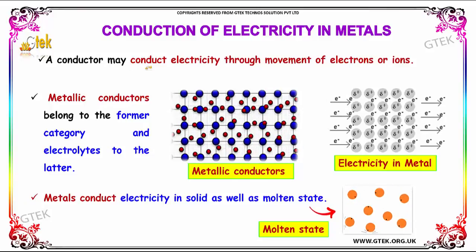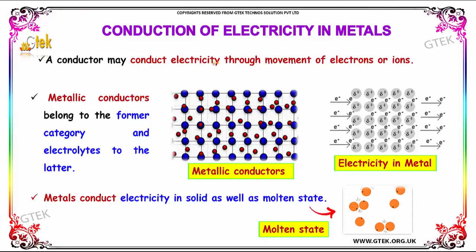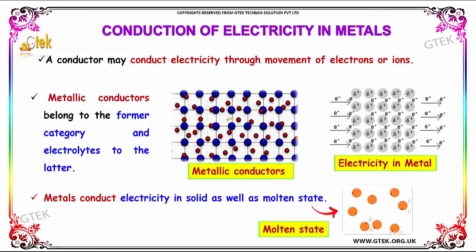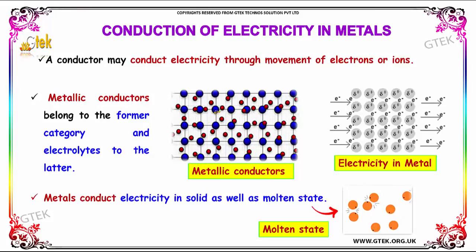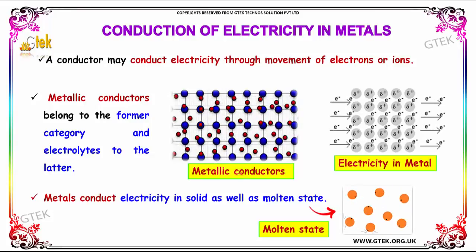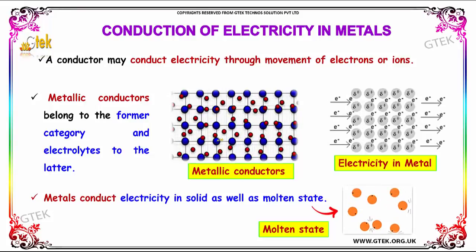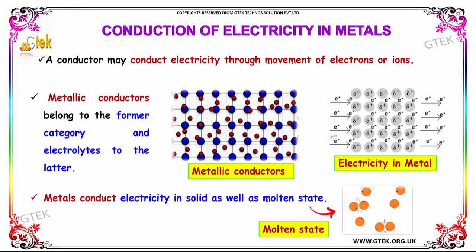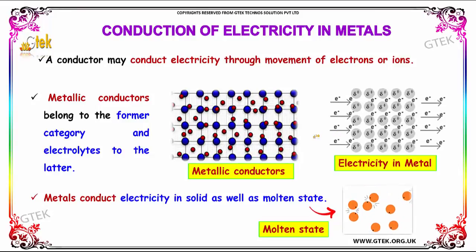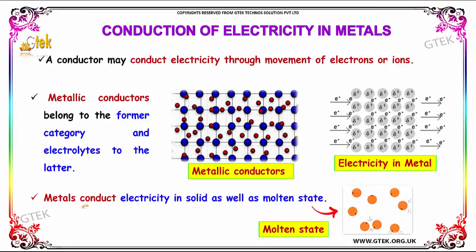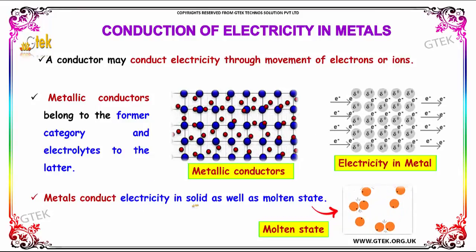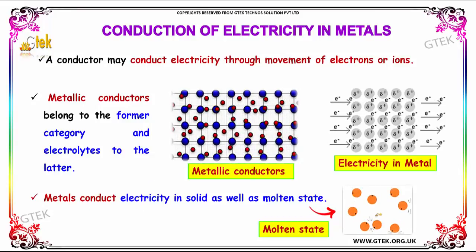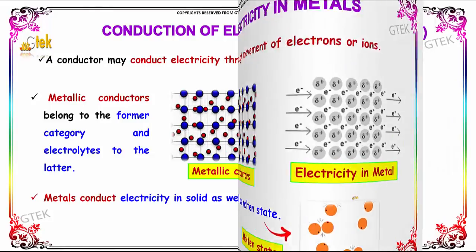A conductor may conduct electricity through movement of electrons or ions. Metallic conductors belong to the former category and electrolytes to the latter. The material conducts electricity in solid as well as in the molten stage.